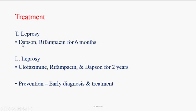Treatment: for tuberculoid leprosy, Dapsone and Rifampicin are used together for six months. For lepromatous leprosy, Clofazimine, Rifampicin, and Dapsone — all three drugs together — are used for two years. Prevention is always by early diagnosis, as early treatment can prevent the major severe damage that occurs in leprosy infections.